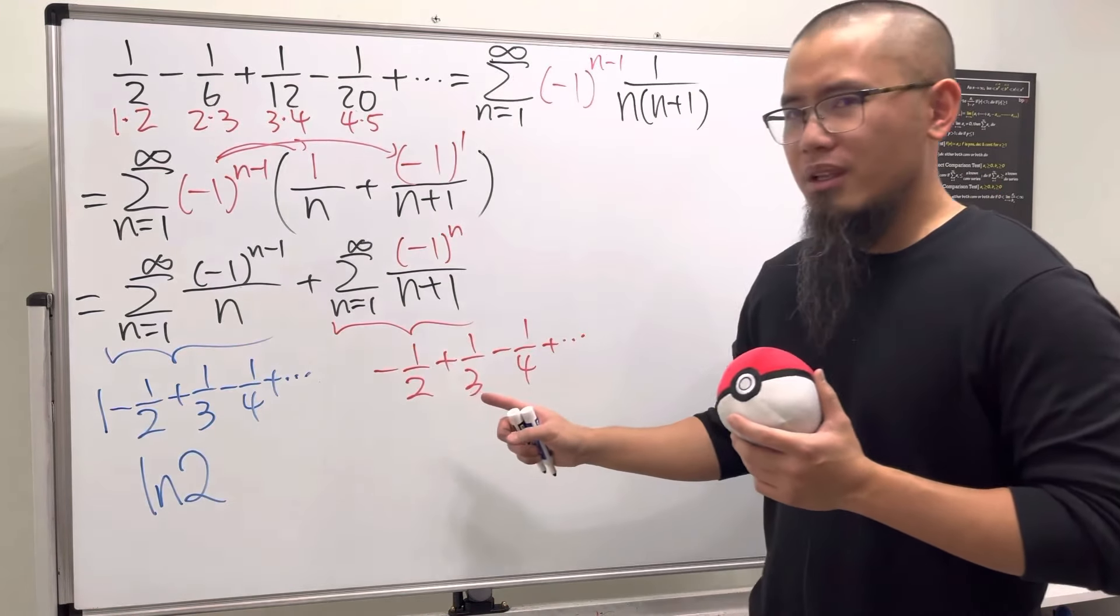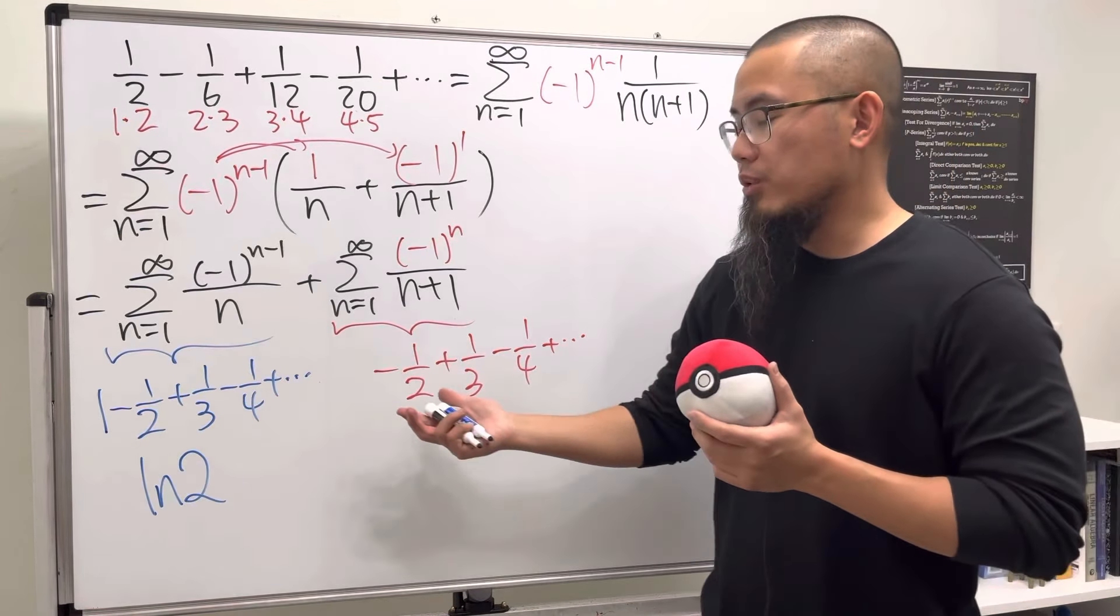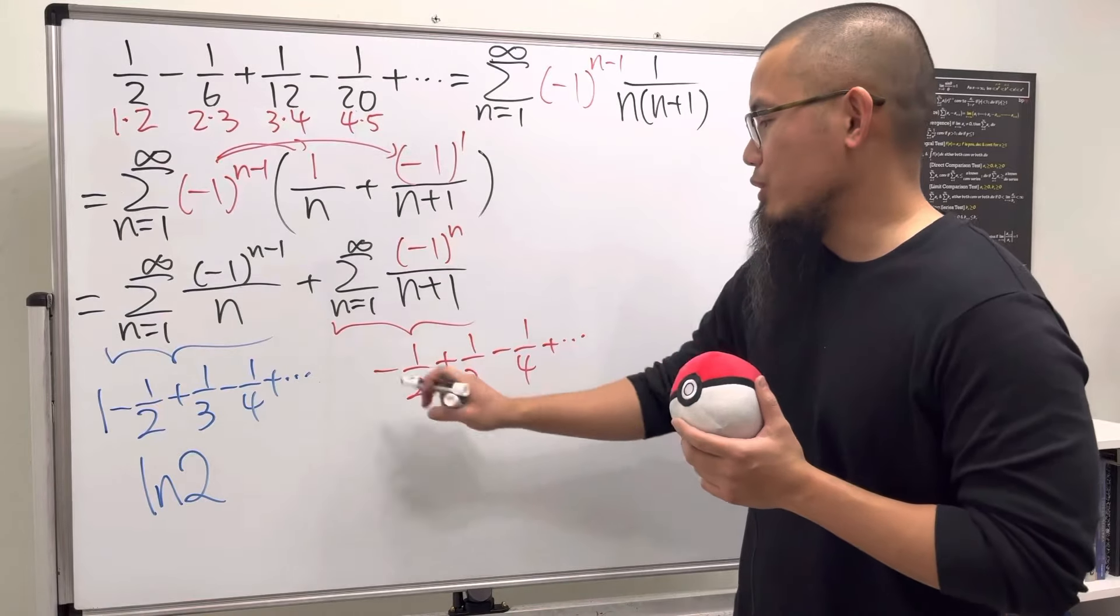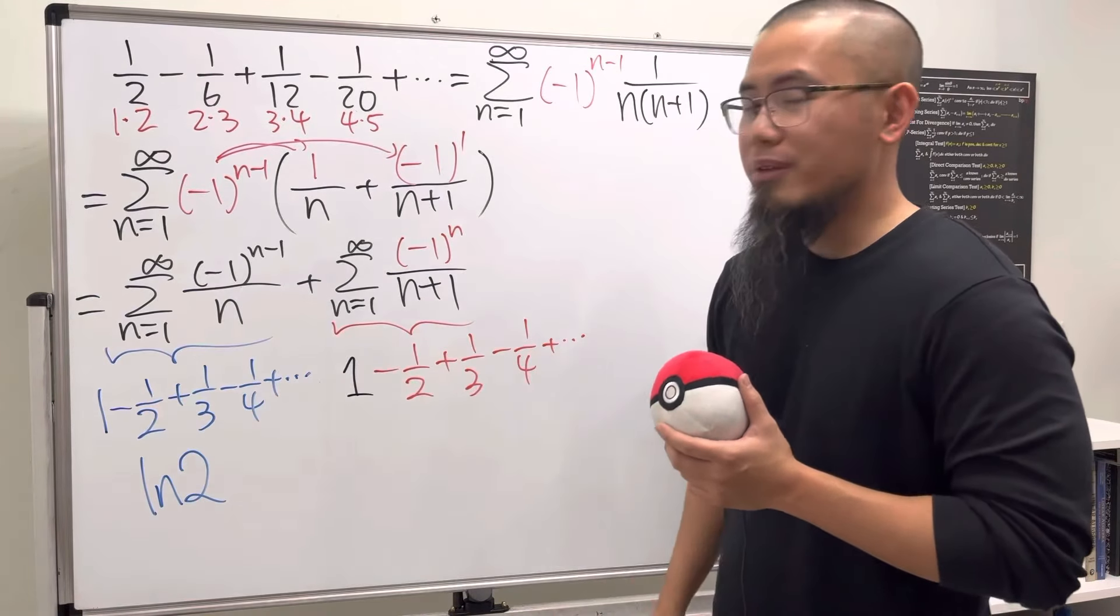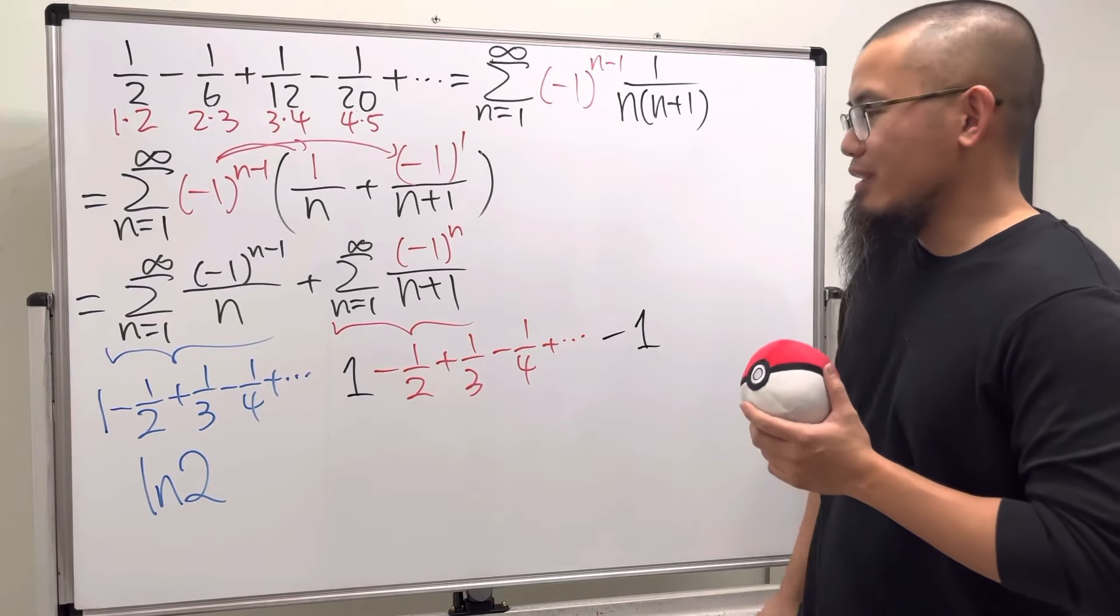If we have the 1 right here, we can complete this and we can make it into ln(2). So then why don't we just go ahead and just add a 1 right here? But of course I cannot just add 1 out of nowhere - it's okay, just minus 1 all the way at the end.